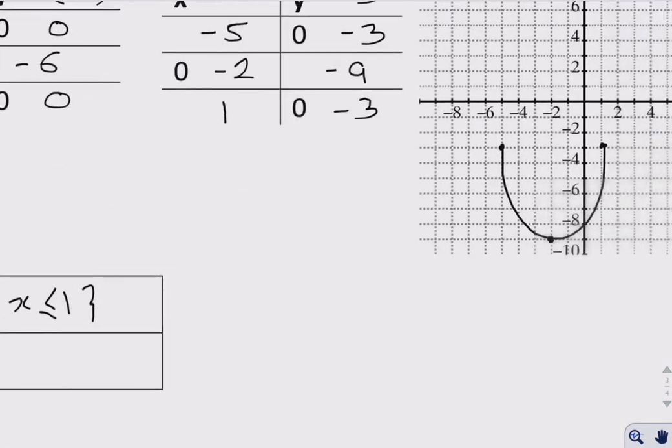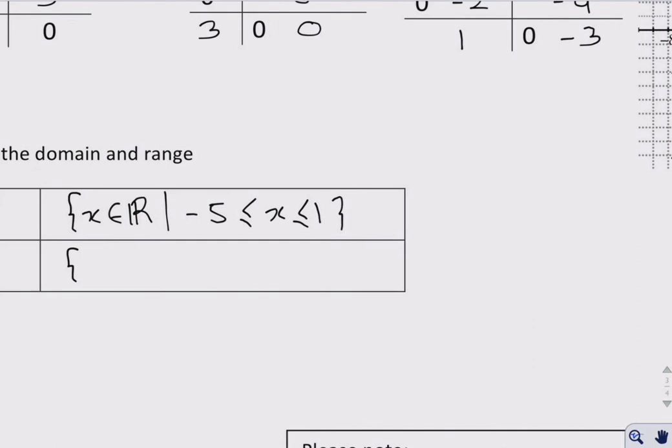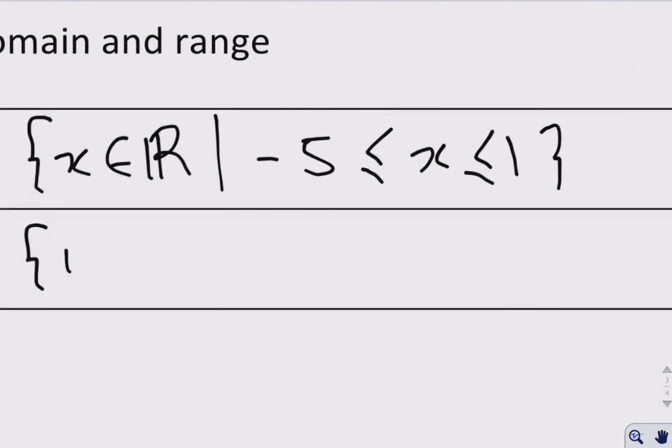And our range, let's take a look over here, is everything from negative 9 all the way up to negative 3. So that's how our range changes a little bit. Negative 9 all the way up to negative 3.